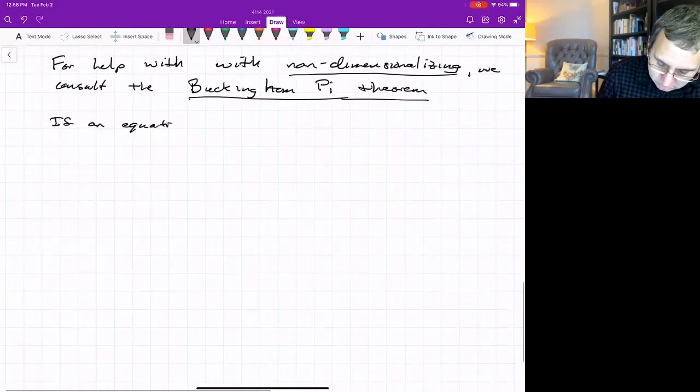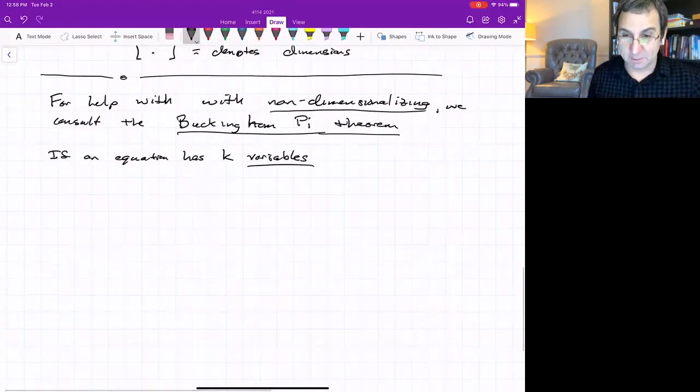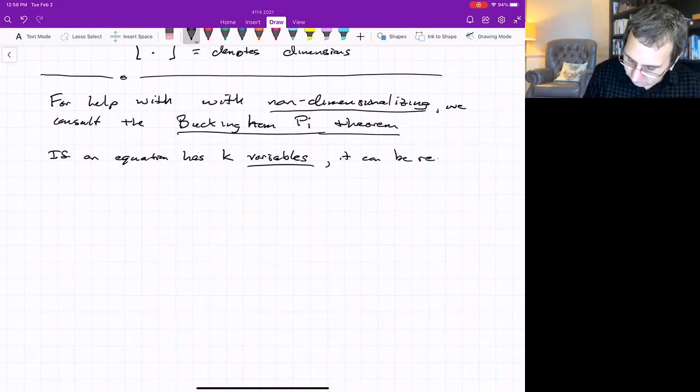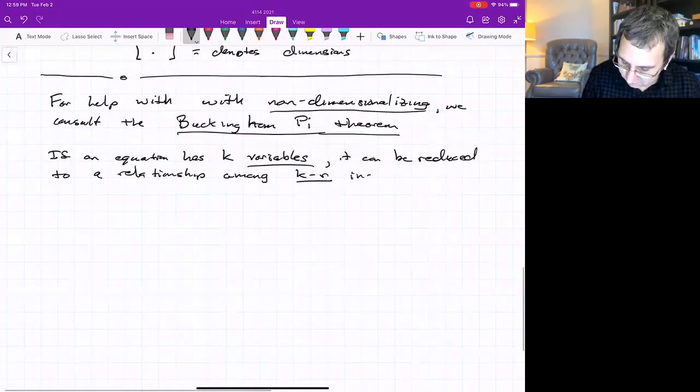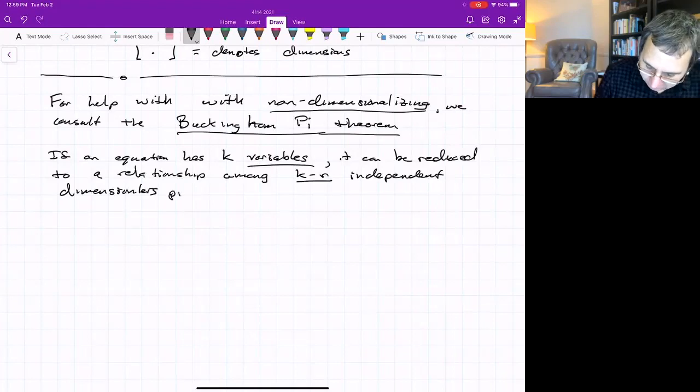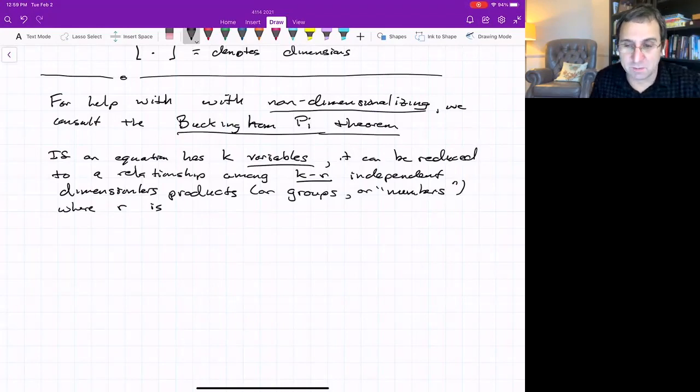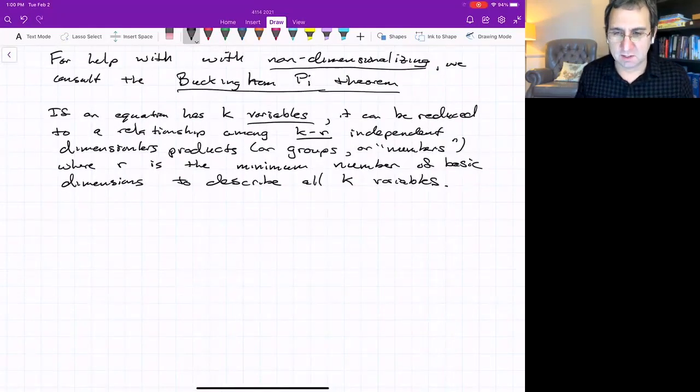Here's the thing. If an equation has k variables, and here they use variables differently from me. Variables, that just means any kind of number. This lumps together what I have called variables, as in things that vary with time, as well as parameters. If an equation has k, and k is going to be an integer, then it can be reduced to a relationship among k minus r independent dimensionless or non-dimensionalized products or groups, or as we might say, numbers, non-dimensional numbers, where r is an integer. It's the minimum number of basic dimensions required to describe all the variables.